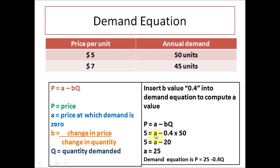So P is 5. We need to find a minus 0.04, which is B, times 50 units. So 5 equals a minus 20, which is 0.04 times 50 is 20.